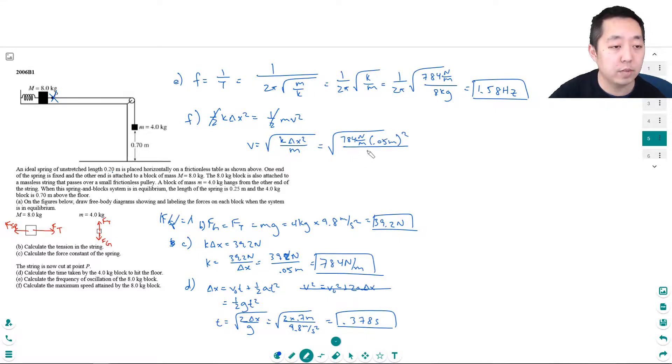So I do square root of 784 times 0.05 squared divided by 8.